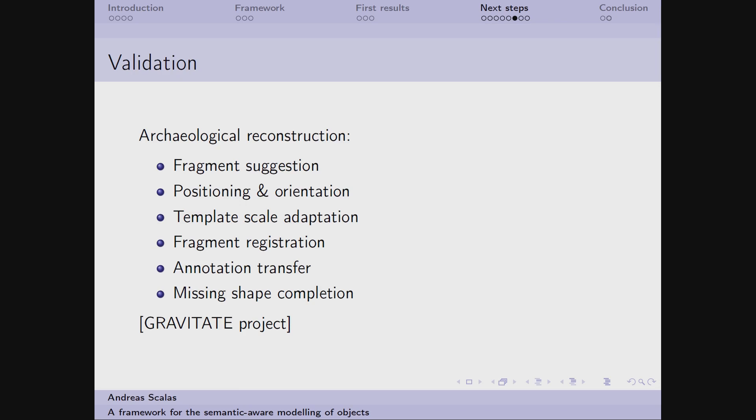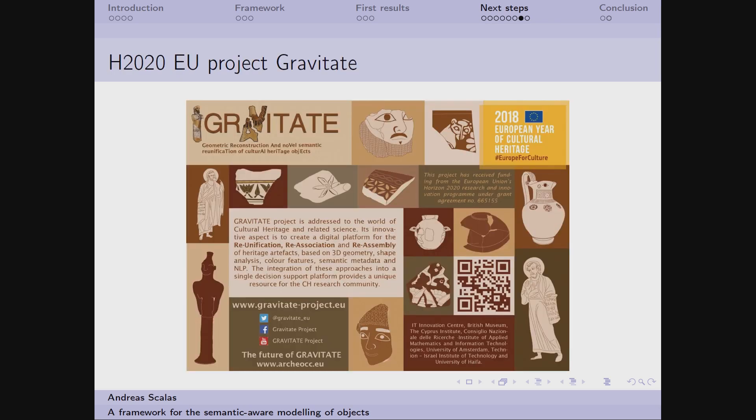Here the template should adapt to the size of the fragments, and the annotations present both on the template and on the fragments should be transferred between them. And at last the template should complete the missing parts of the object under user request. This scenario comes directly from a European project in which I was involved, that is called GRAVITATE, and which goal is the creation of a digital platform for the unification, re-association, and re-ascending of heritage artifacts based on their geometry and so on applying shape analysis tools, on color features, and on the analysis of semantic metadata and the documentation in general using natural language processing techniques.